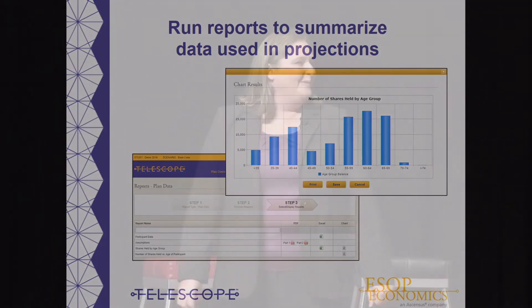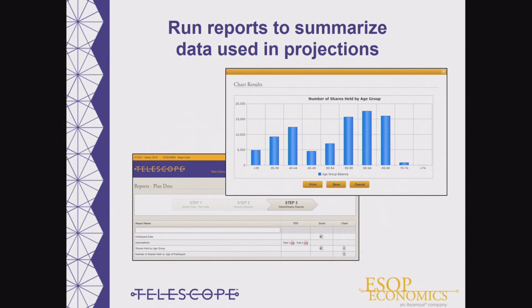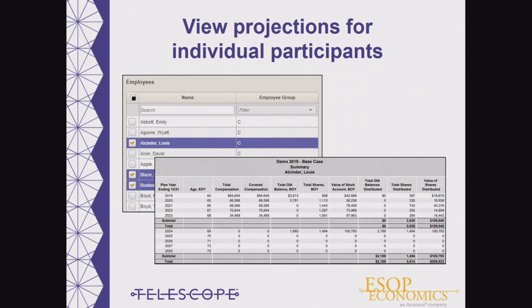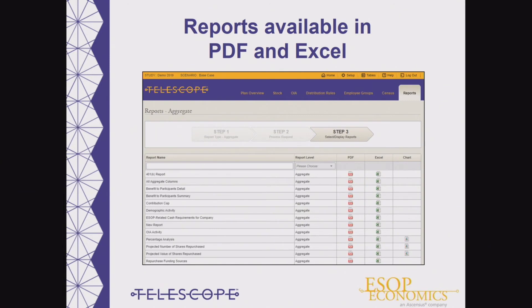In just a minute, we will take a look at the aggregate reports, where you can review projections for the total ESOP and also at the employee group or tranche level. But first, projection reports are also available at the individual level — so if you'd like visibility on some top account holders, you can run individual account projections. Under the aggregate reports, you can view the whole list of available reports, which are available in PDF format as well as Excel, and there are even a few charts.